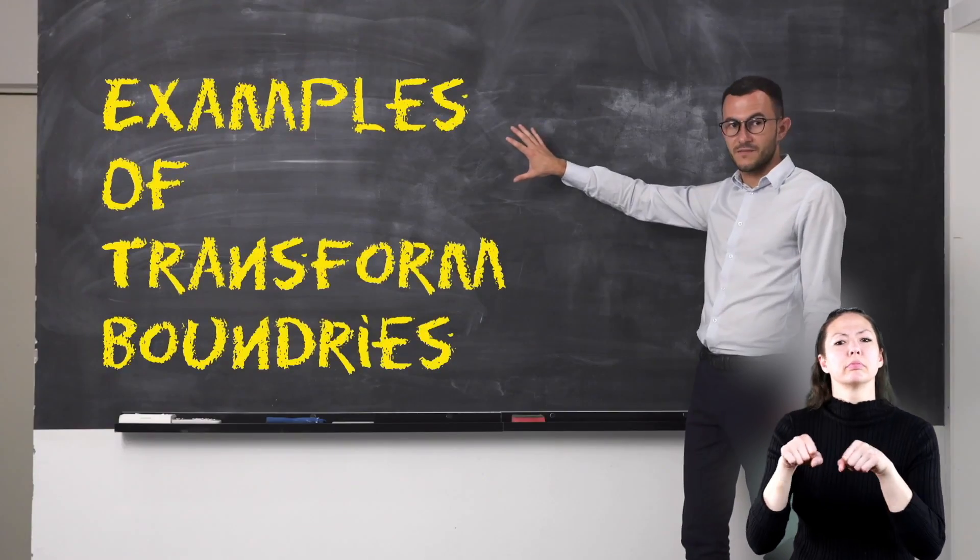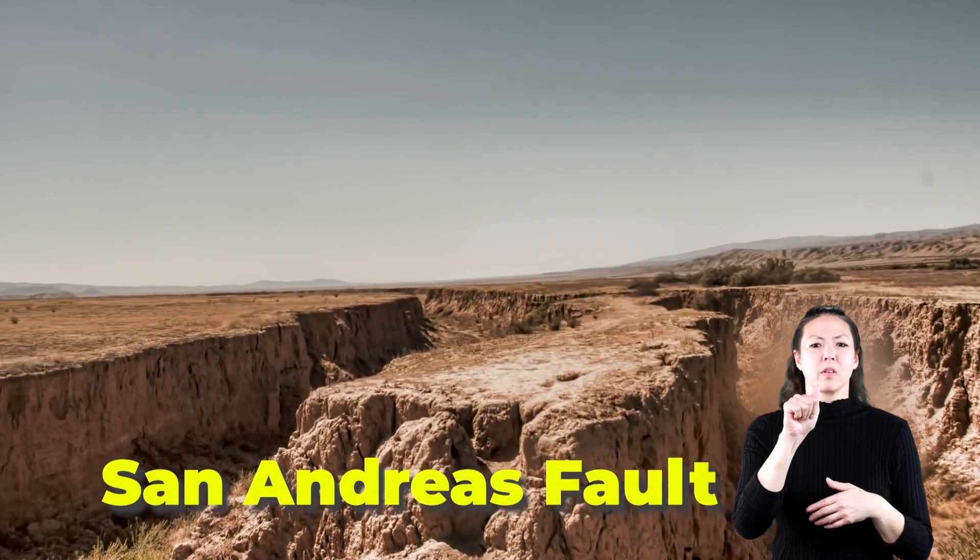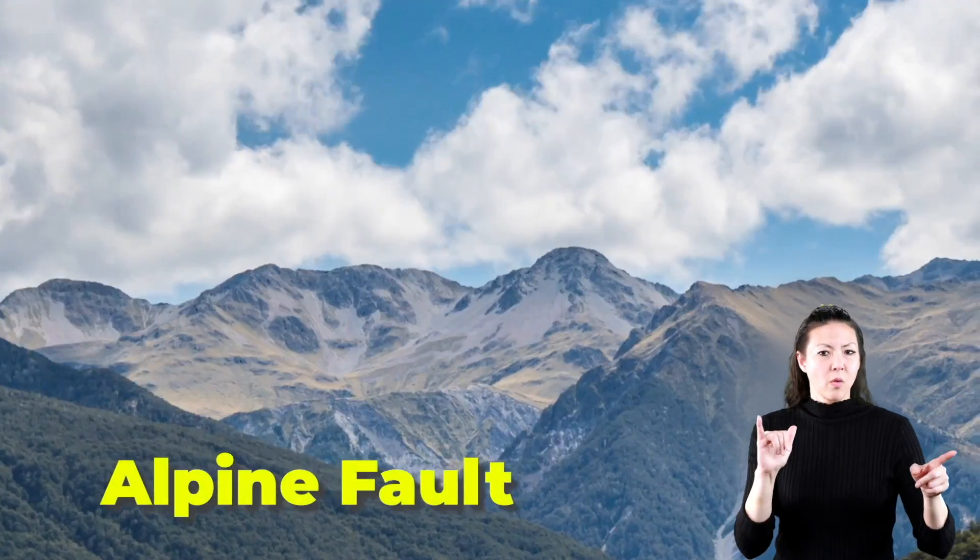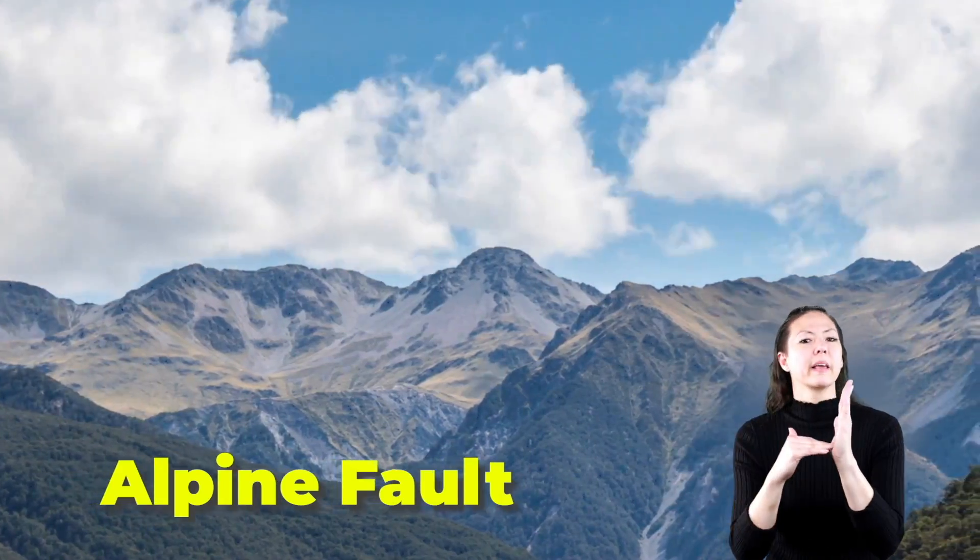Examples of transform boundaries include the San Andreas Fault in California and the Alpine Fault of New Zealand.